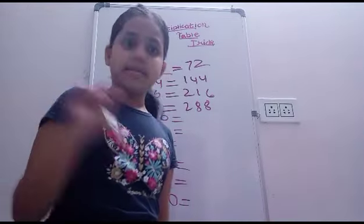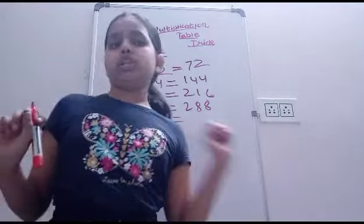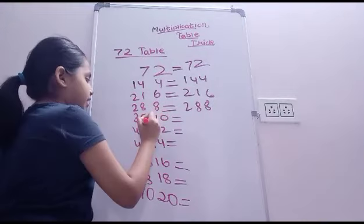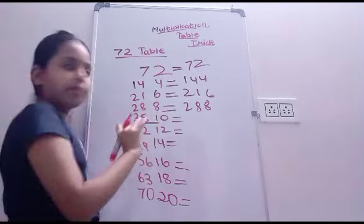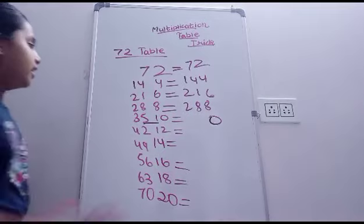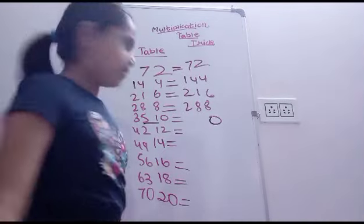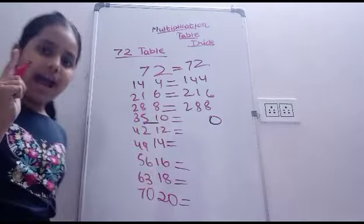As you said that addition, subtraction, yes, we are going to do addition. Now this 0 will remain same. Okay? Now 5 plus 1 is 6. The between numbers you have to add. 5 plus 1 is 6.